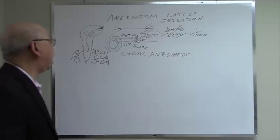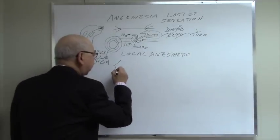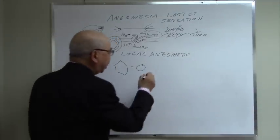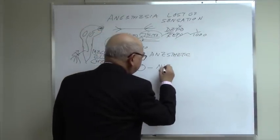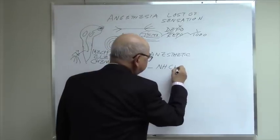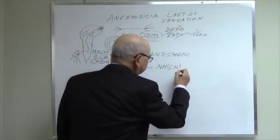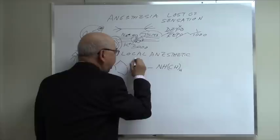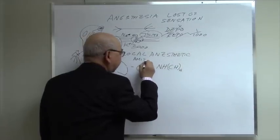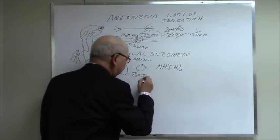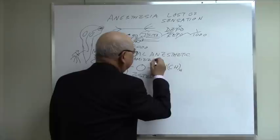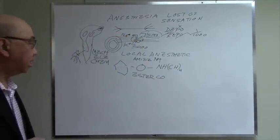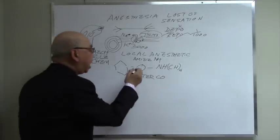How do local anesthetics work? The structure of a local anesthetic is basically a benzene ring, a linkage, and an ammonium compound. This linkage could be amide or ester. So we classify local anesthetics into amide and ester.